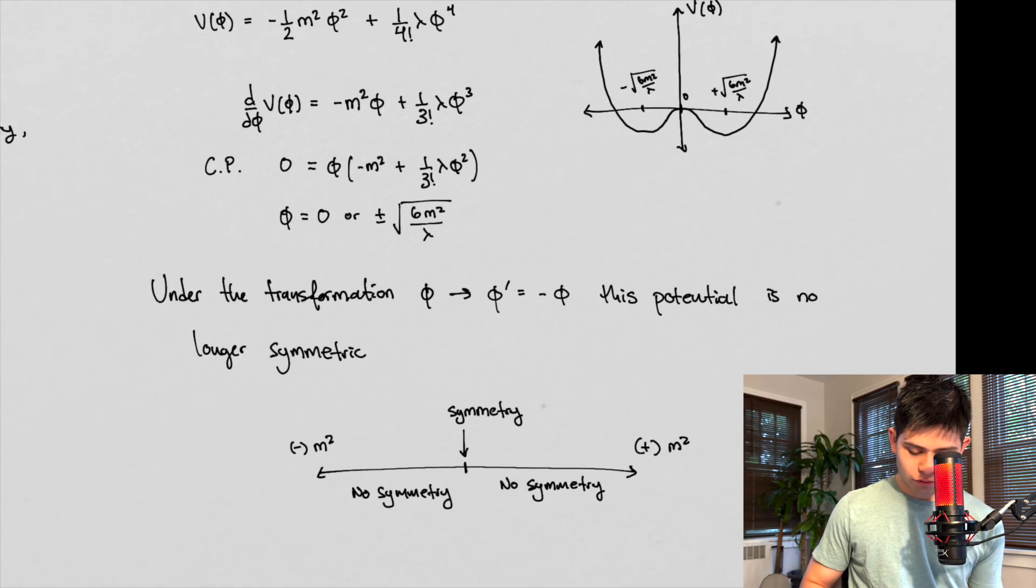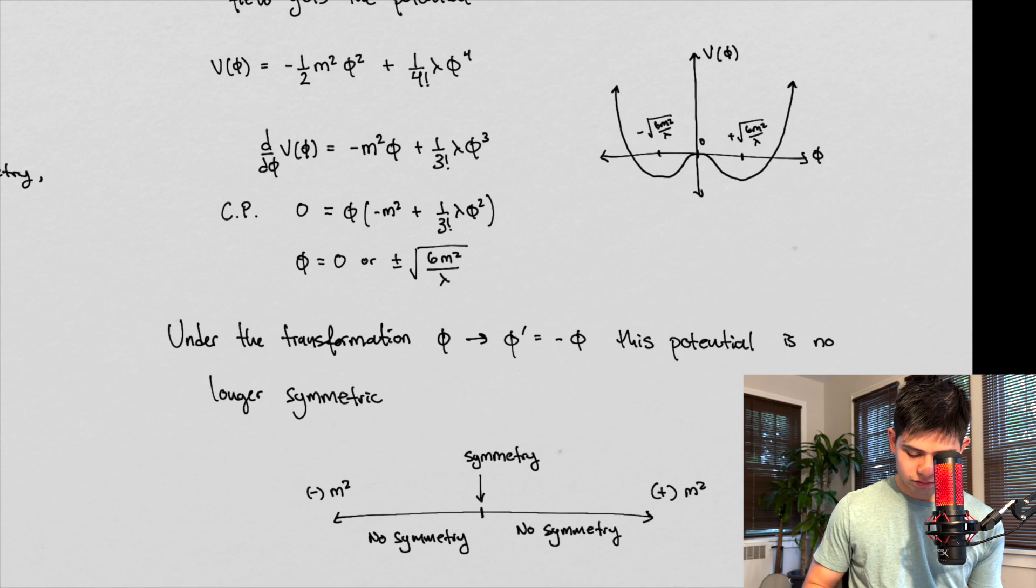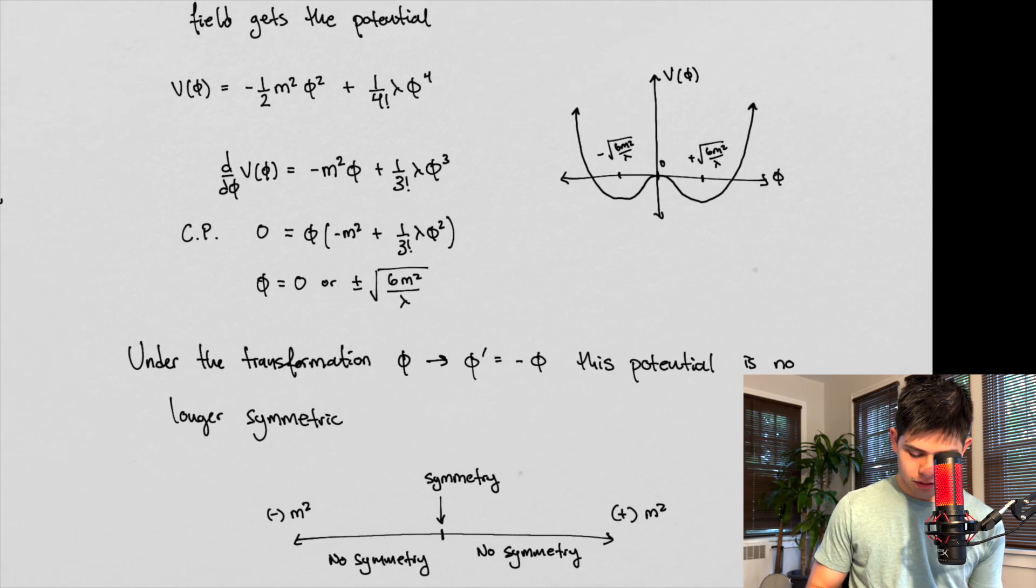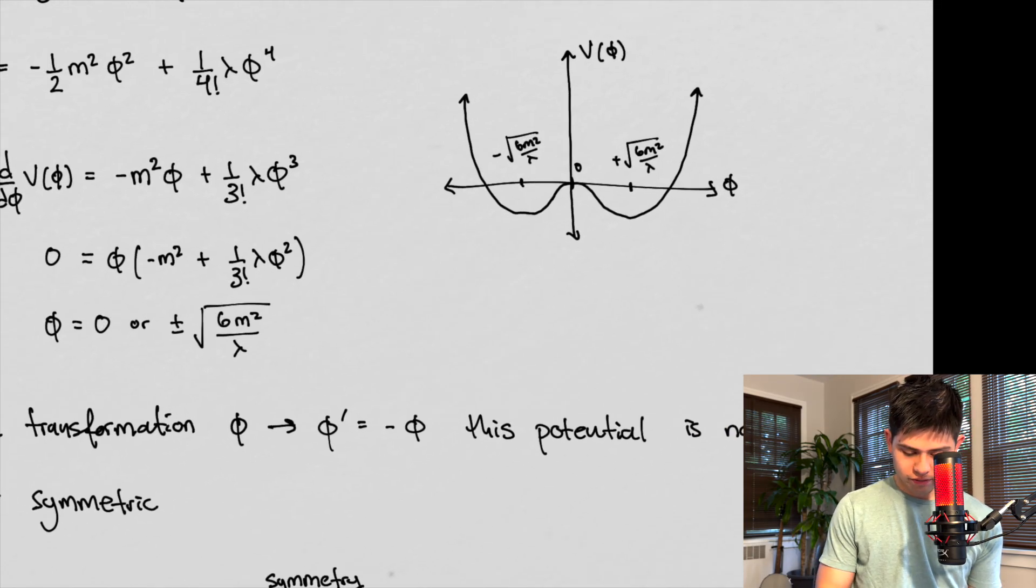So if we transform now, if we make the transformation, this transformation right here, phi, the new phi goes to negative phi, what we end up finding is that, well, we can do it right here, right? If phi,